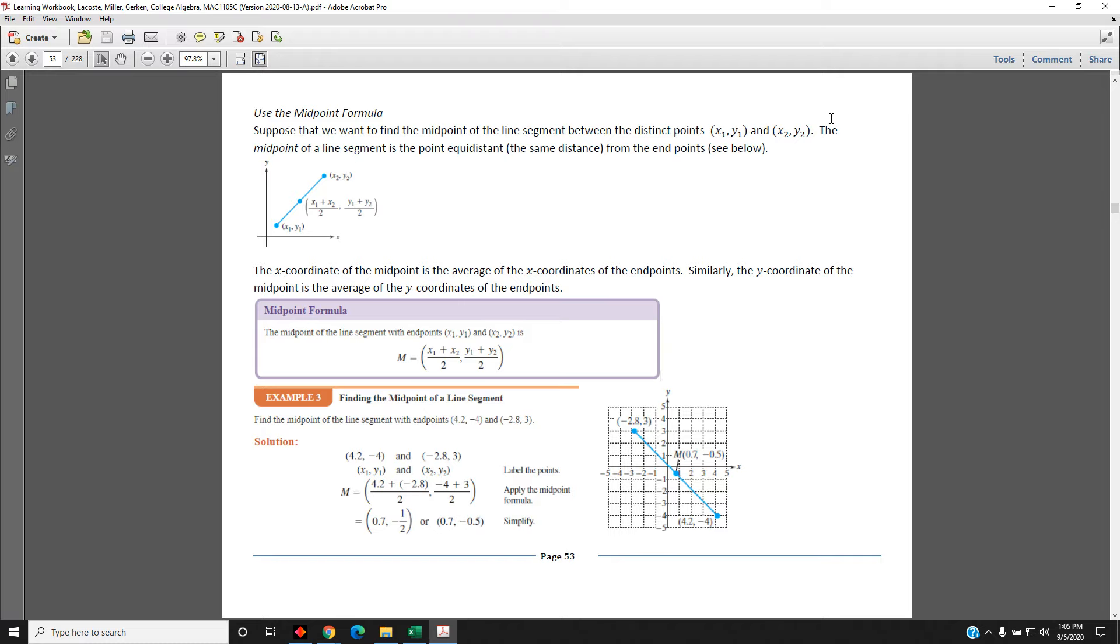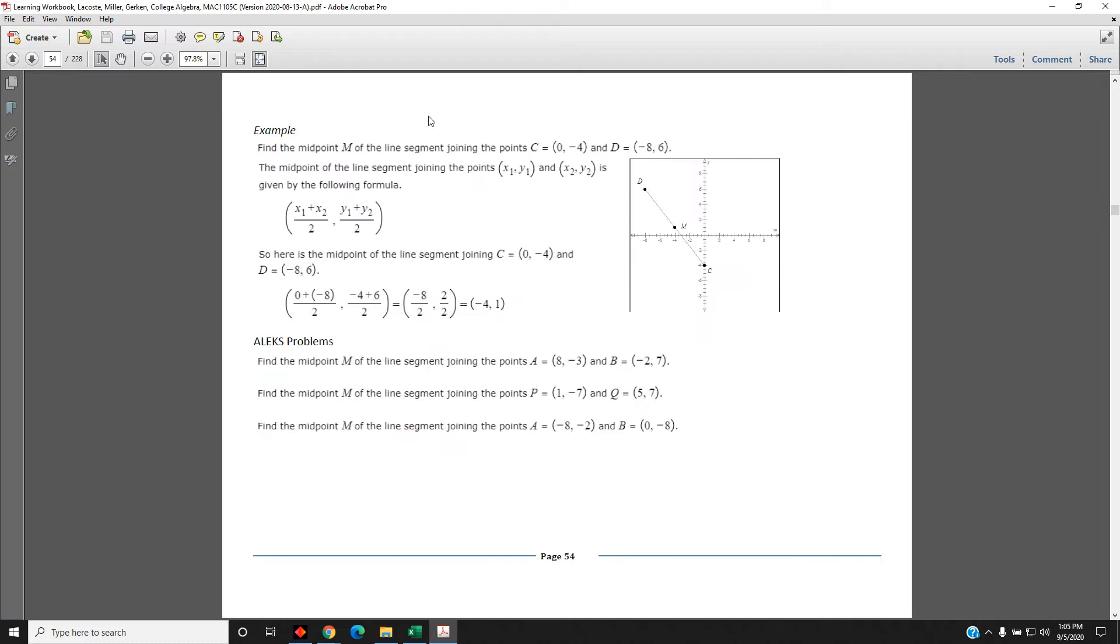Let's look at one more example. Find the midpoint M of the line segment joining the points C equals 0, negative 4, and D equals negative 8, comma 6.